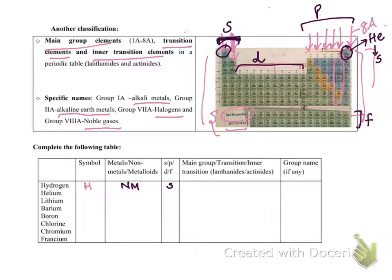Main group, transition, inner transition. So here, main group are basically all these big columns. All my s and p-block - these big columns - they are main group elements.